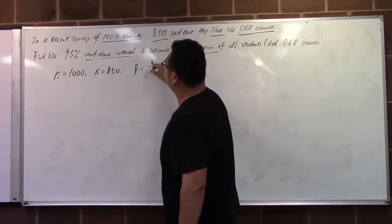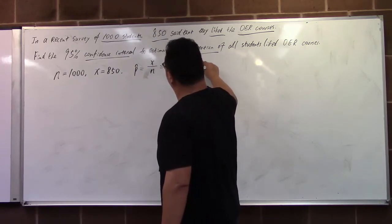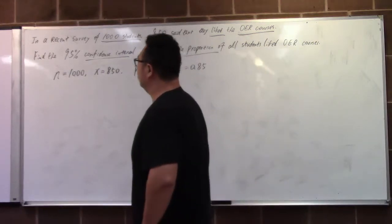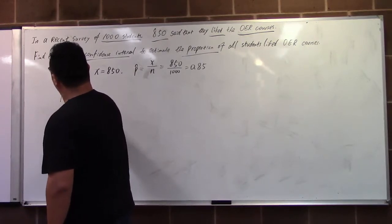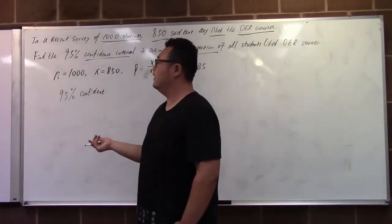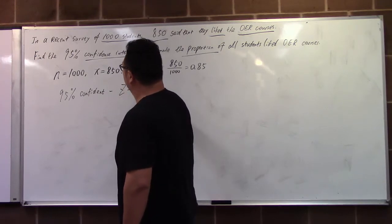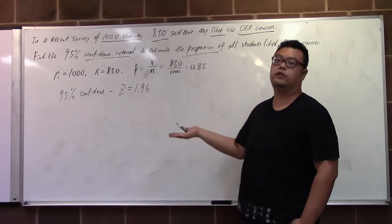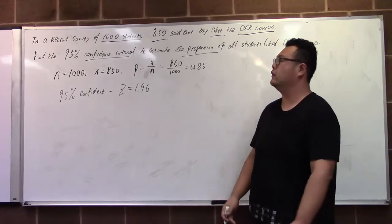The formula uses n = 1,000 and x = 850, giving us a 95% confidence level, so the z-score is 1.96. With the z-score and the sample proportion, we are able to find the margin of error using the formula, and together with the sample proportion, we are able to find the confidence interval for the population proportion.